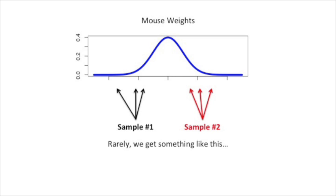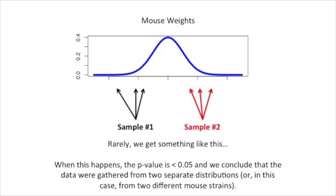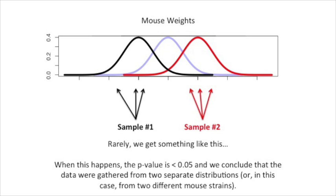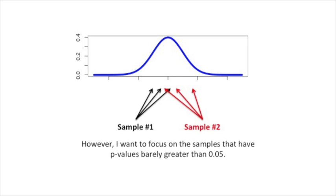P-values less than 0.05 are called false positives. Most of the time we expect the two samples to be close to each other and to overlap. Rarely, we might get something like this, where the two samples are pretty far apart from each other. When this happens, the p-value is less than 0.05, and we conclude that the data were generated from two separate distributions, or in this case, two different mouse strains. We'll talk about false positives some other time.